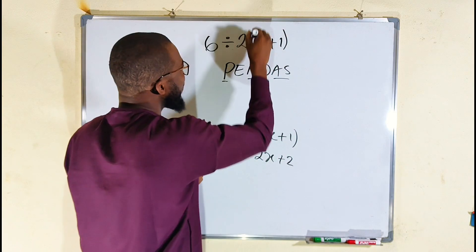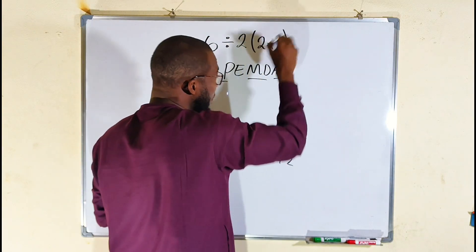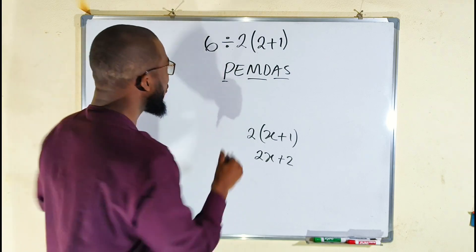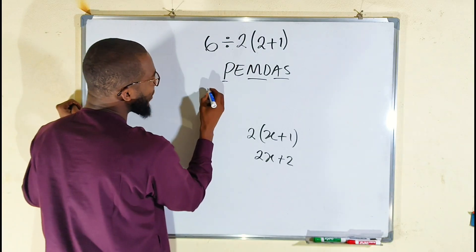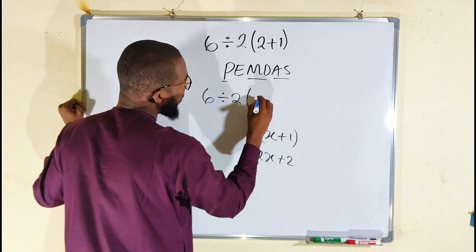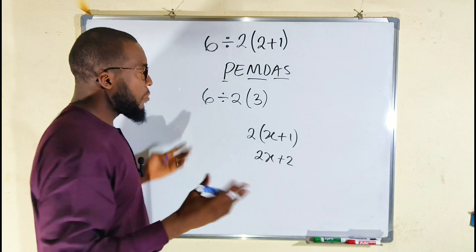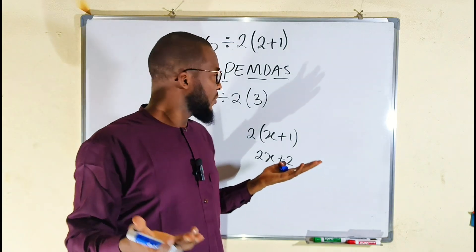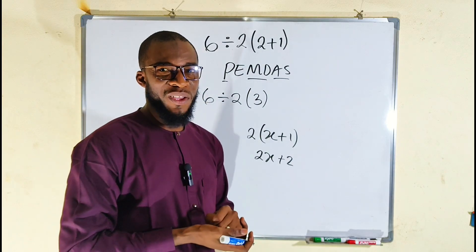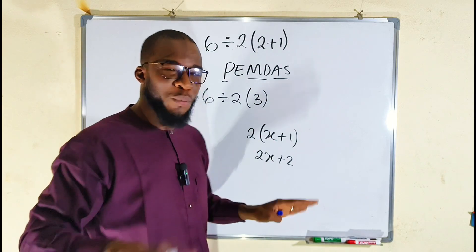It means what is inside should be simplified. This is parenthesis. The whole of this is our parenthesis, right? So what is inside is just 2 plus 1, which is 3. So we can write this according to PEMDAS as 6 divided by 2 in parenthesis, we have 3. But there is nothing under the parenthesis except 3.